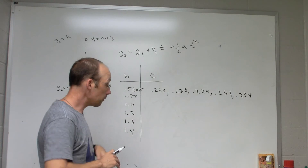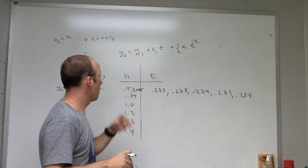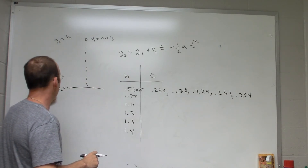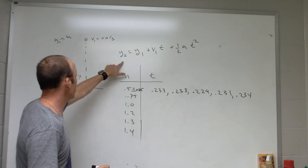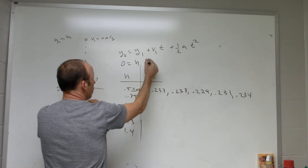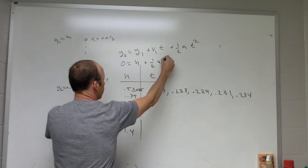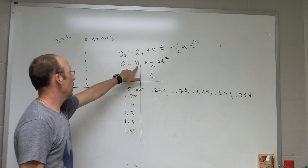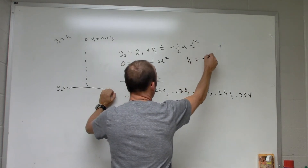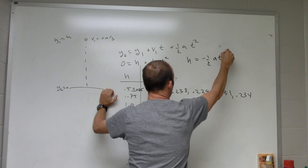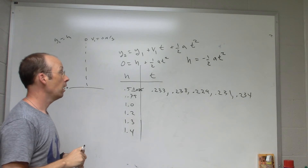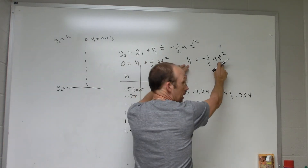Now, how do we find the acceleration? Let my initial height be h, final height be zero, and initial velocity be zero. The kinematic equation becomes: 0 = h + 0 + one-half a t squared, so h equals negative one-half a t squared. Since a is negative for downward acceleration, h is positive. So h and t are my two variables.